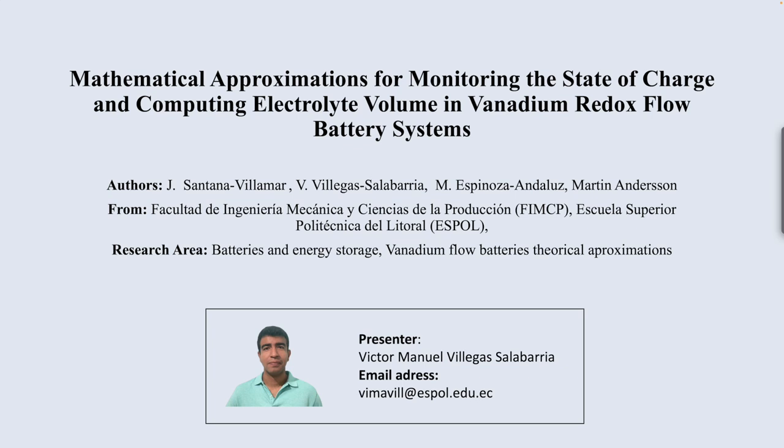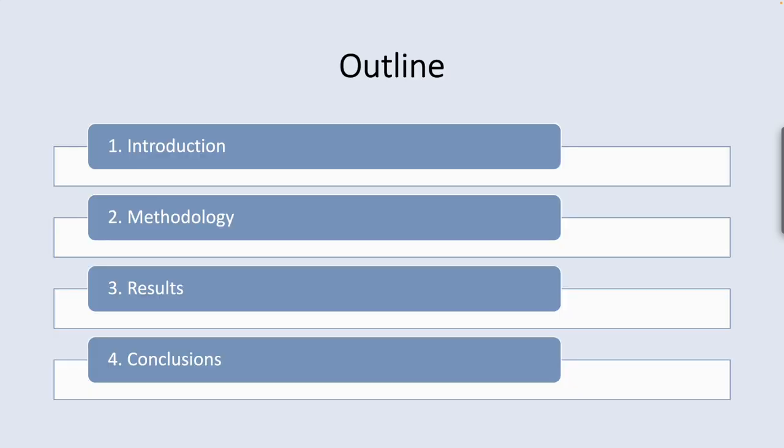For this presentation the outline is as follows. In the introduction, it will be described and defined what vanadium flow batteries are, how their general configuration is, and how they can be related to different applications. In the methodology section, it will be explained the principal equations used in the study to get the results that will be shown in the next section. In the results section, graphics of the state of charge and electrolyte volume will be shown. Finally, a summary of the work realized will be given in the conclusions section.